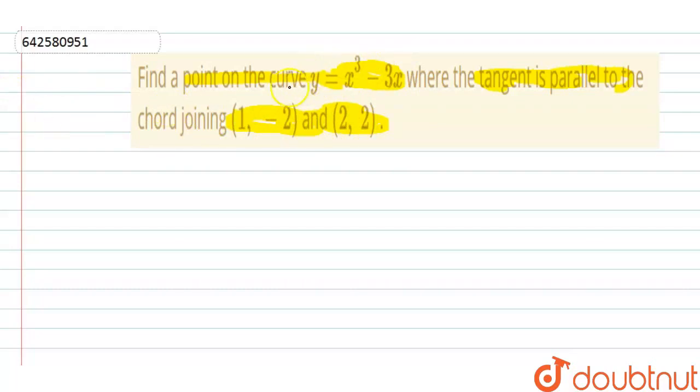Let's find the slope of this curve, which is going to be dy/dx equals 3x squared minus 3.